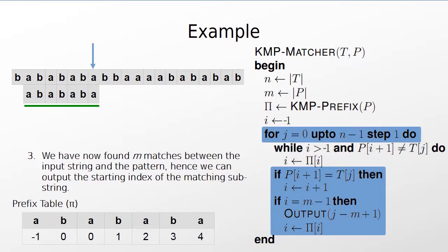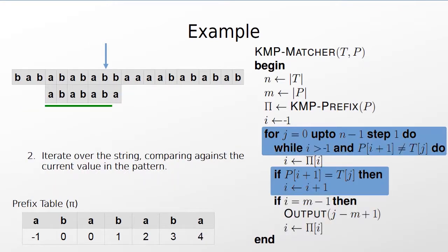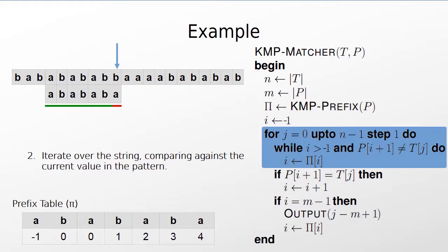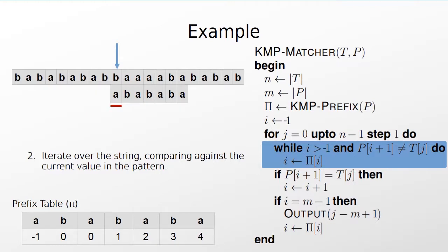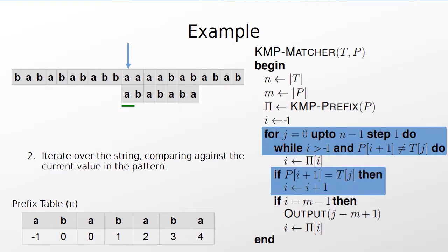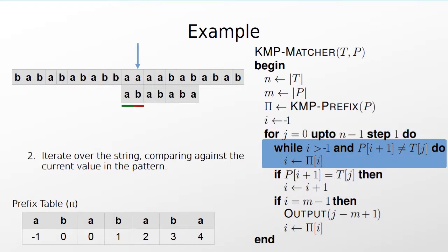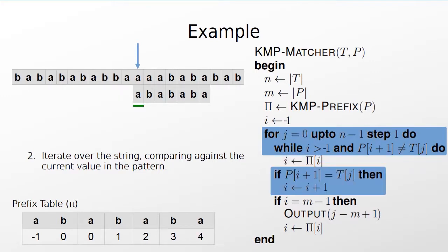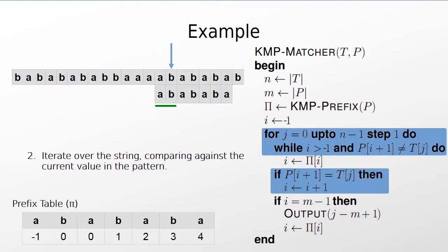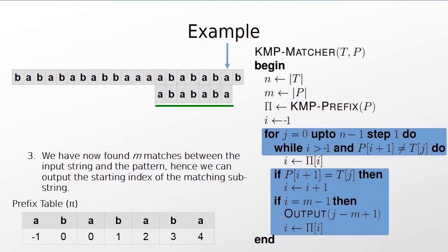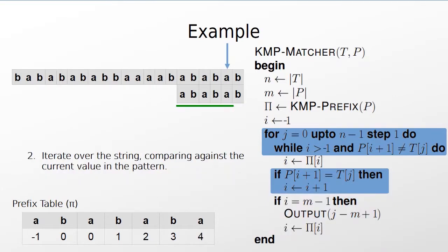Here the index of the match starts at 1. We have another match. 'a' and 'b' don't match so now we have to repeatedly set the value of i to the value specified in the prefix table until we have found a match or we reach the start of the pattern. Here the start of the pattern is reached so we move on to examine the next element in the input. We have found a match. Now we have a mismatch so we use the prefix table as before. This happens two more times. We find another matching substring and output its starting index which is 13 in this example. We set i once again to the value specified in the prefix table. We find one more character match before reaching the end of the input string, at which point the algorithm terminates.